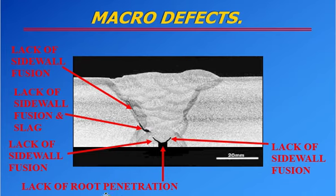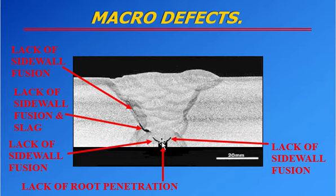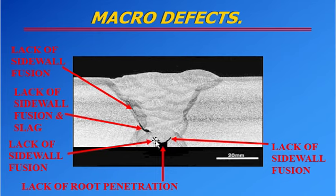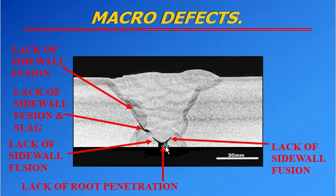Very importantly, lack of root penetration — the penetration is not there. The base metal is present but when the electrode welds the joint, it cannot melt and join the root face and the weld metal properly. This is called lack of root penetration. Similarly, lack of sidewall fusion is where the side wall fusion is not done. So remember: the side wall areas are lack of sidewall fusion, and the root area is lack of root penetration.